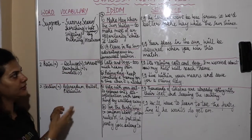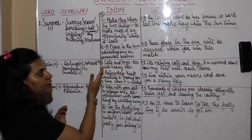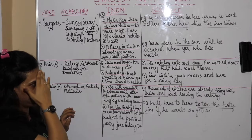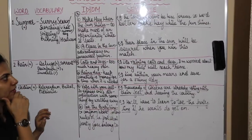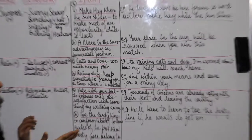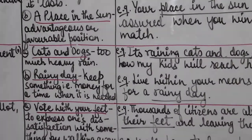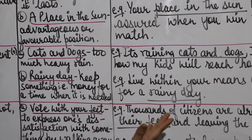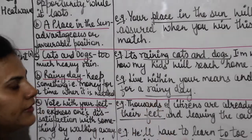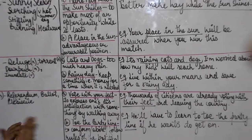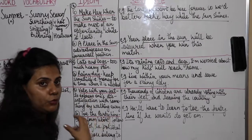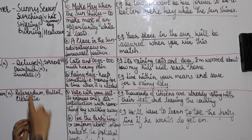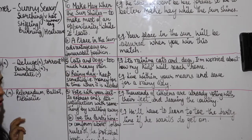Idioms related to rain: the first is 'cats and dogs.' We hear it on a day-to-day basis — 'cats and dogs' means very heavy rain. When it rains heavily, we use this idiom. For example: 'It's raining cats and dogs; I am worried about how my kids will reach home.' There's very heavy rain and I'm worried about my children getting home safely.